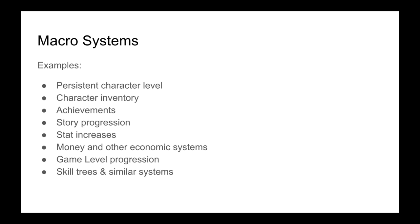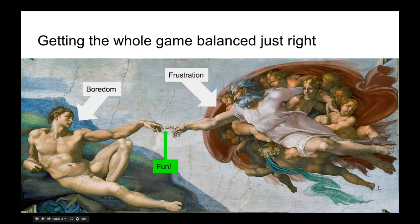We want the player to have the right amount of challenge in the right place. Money and other economic systems — if your game has an economy, whether it's an MMO or it's saving up jewels to buy a new level, it's an economic system and those cover large areas and often the whole game. Game level progression as well: games like Cut the Rope where you earn stars to unlock new levels, or a hub world, or an MMO where you earn the right to enter different instances — that's a macro system of progression. Similarly with skill trees, we have to take a long-view approach to make sure the game as a whole is working cohesively.